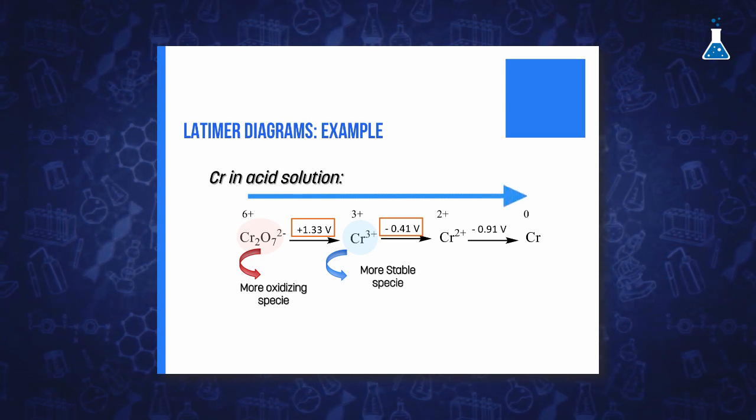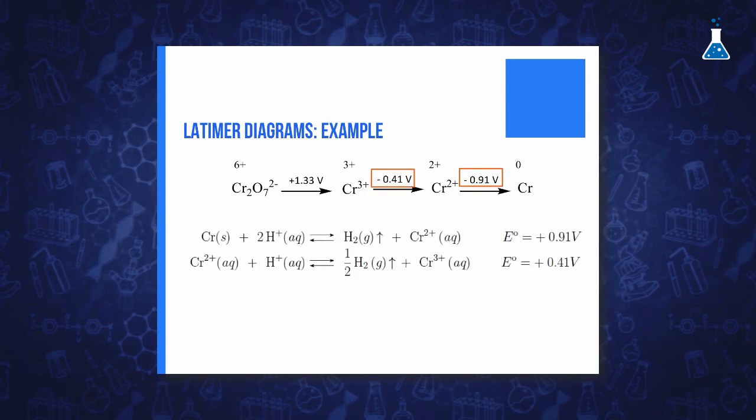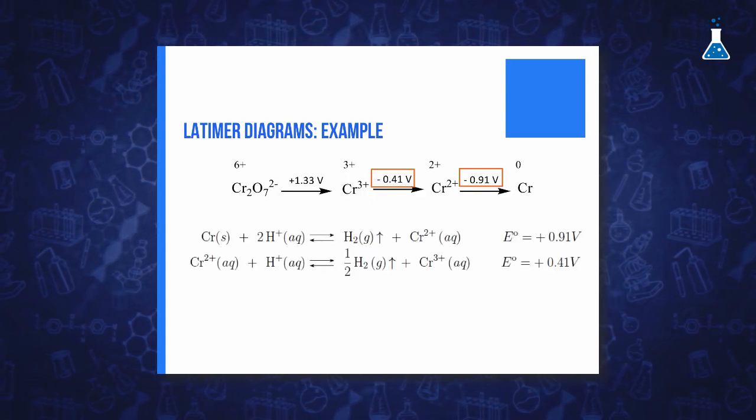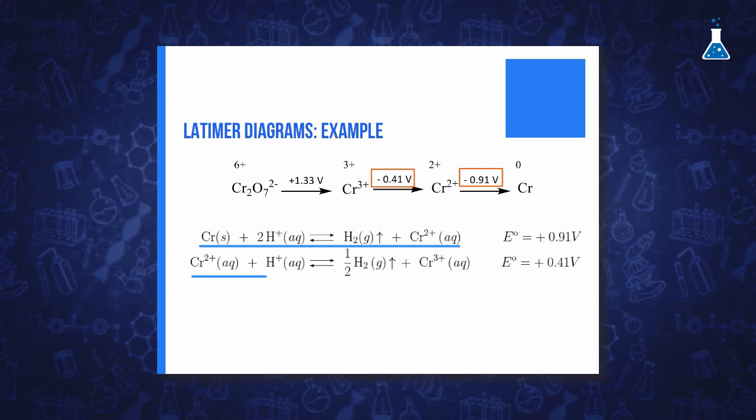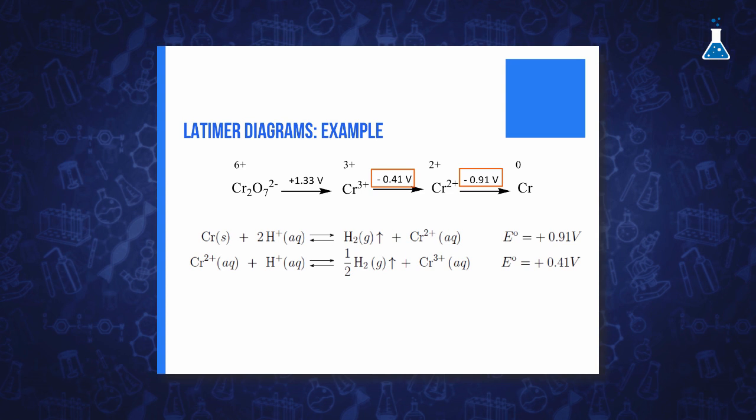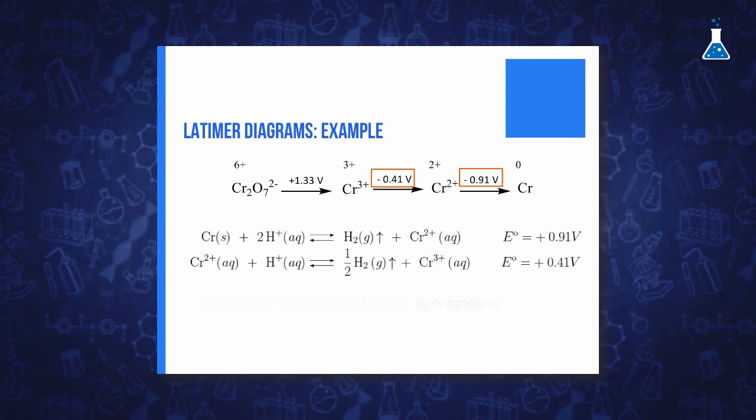That means that chromium would react in acidic solution to give the corresponding chromium 3+, as can be deduced by examining these oxidation reactions. The positive values of these two stages indicate that these reactions are spontaneous.